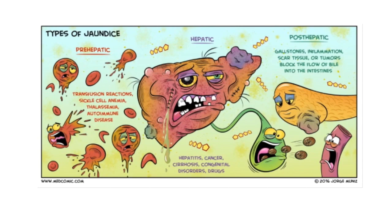Pre-hepatic jaundice has to do with destruction of red cells, manifesting as anemia. The clues are that your LDH will be up, your Coombs will be up depending on whether you're looking at an autoimmune process. This can be either hemolytic or non-hemolytic in nature — we're looking at transfusion reactions, sickle cell anemia, thalassemia, autoimmune disease, and so forth.